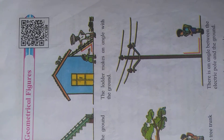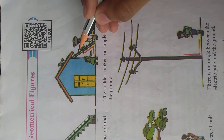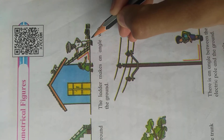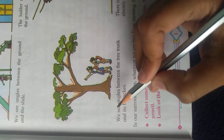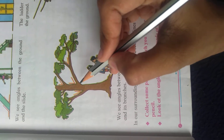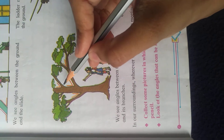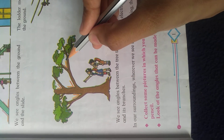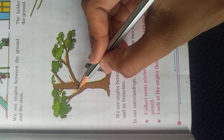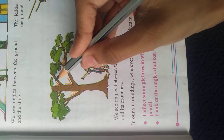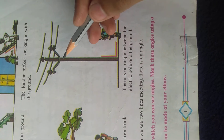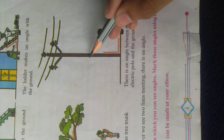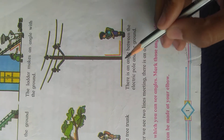Now see the next picture. The ladder makes an angle with the ground. In the third picture, we can see the angle between the tree trunk and the branches — here is angle 1, angle 2, angle 3, and angle 4. Let's see picture number 4: there is an angle between the electric pole and the ground.